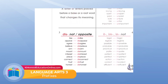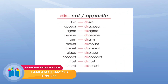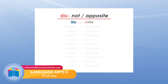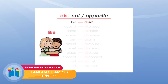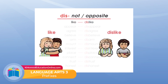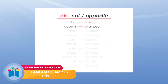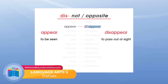Now look at square number three. The prefix is 'dis' — D-I-S. It means 'not' or 'opposite.' Like 'like' — to like somebody, to care for somebody. Or 'dislike' — not to like them. 'Appear' means to be seen or to be looked at. 'Disappear' means to pass out of sight; you can't see them anymore.